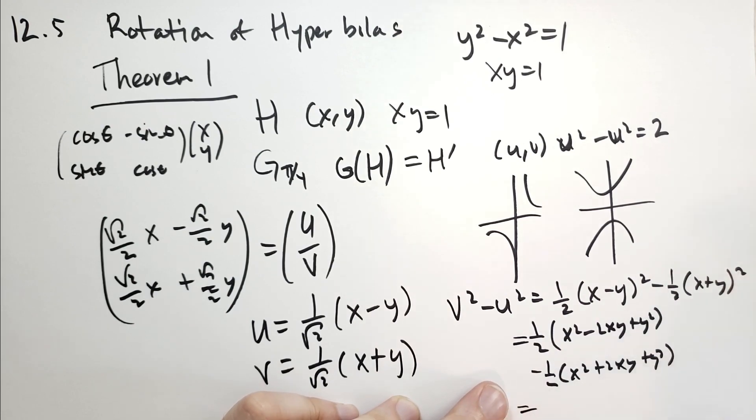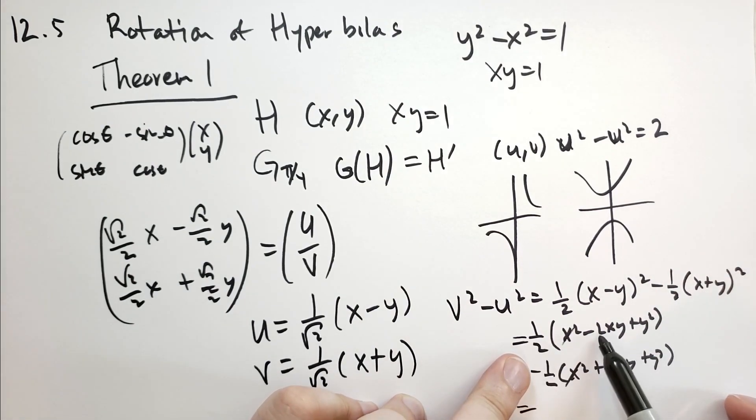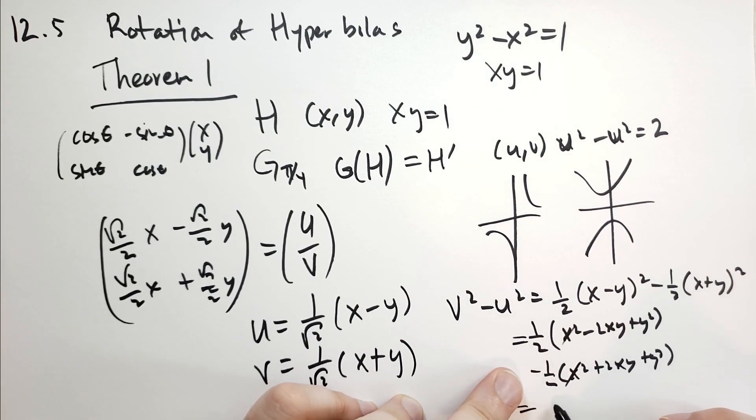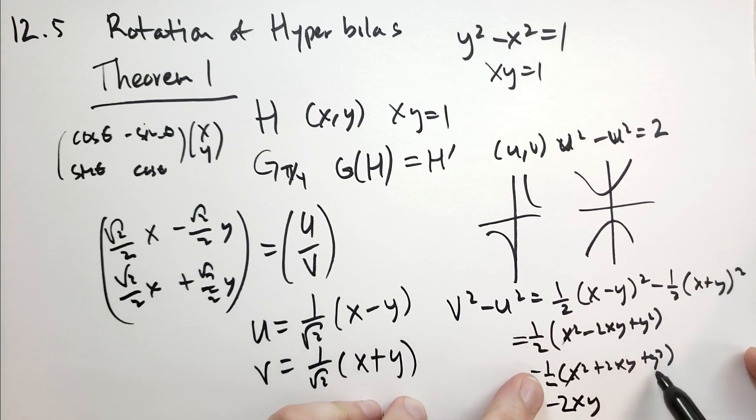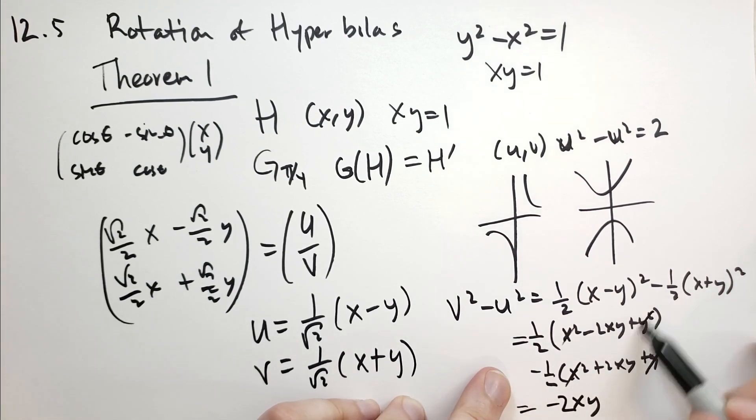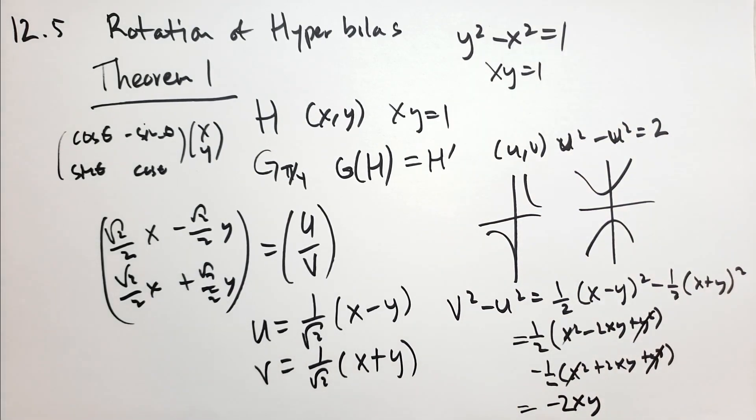1 half x squared minus 1 half x squared, that turns out to be 0. We're going to get a minus 2xy, and we're going to get 1 half y squared minus 1 half y squared, and these two terms are going to cancel.